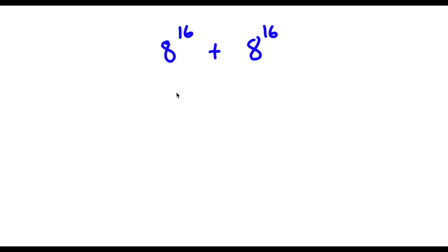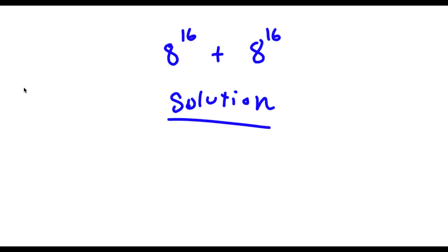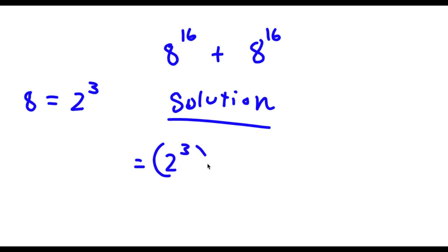Alright, so I have 8 to the power of 16 plus 8 to the power of 16. For my solution, 8 here is the same thing as 2 to the power of 3. So if I substitute 2 to the power of 3 in for 8, I get 2 to the power of 3 to the power of 16, plus 2 to the power of 3 to the power of 16.